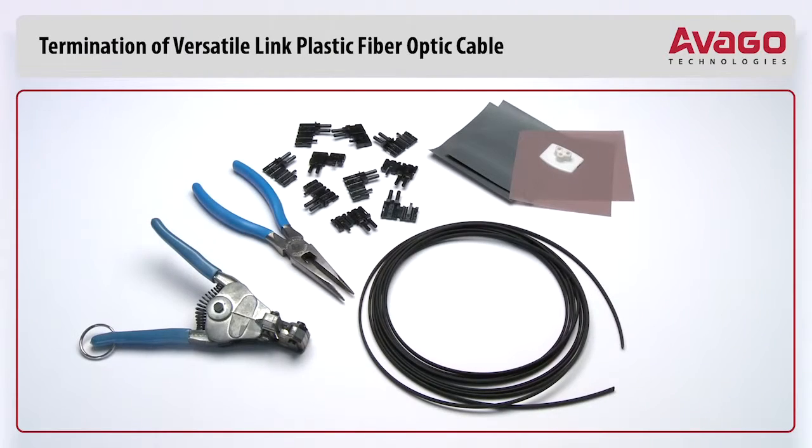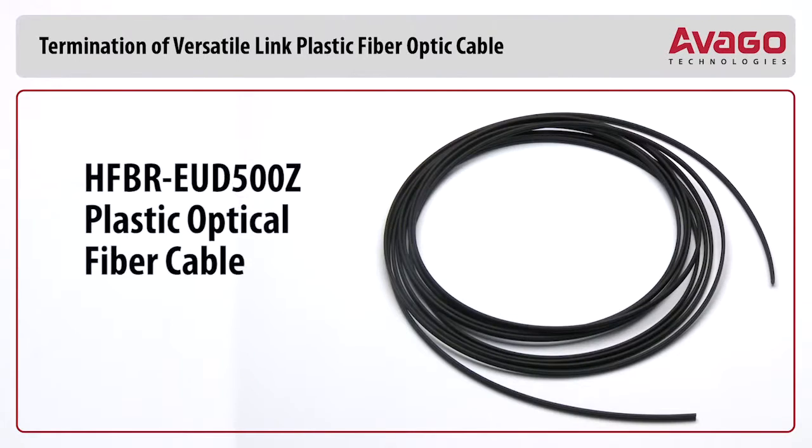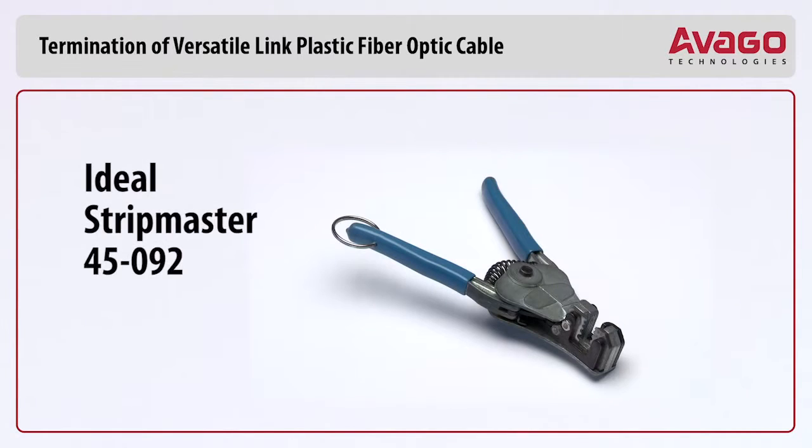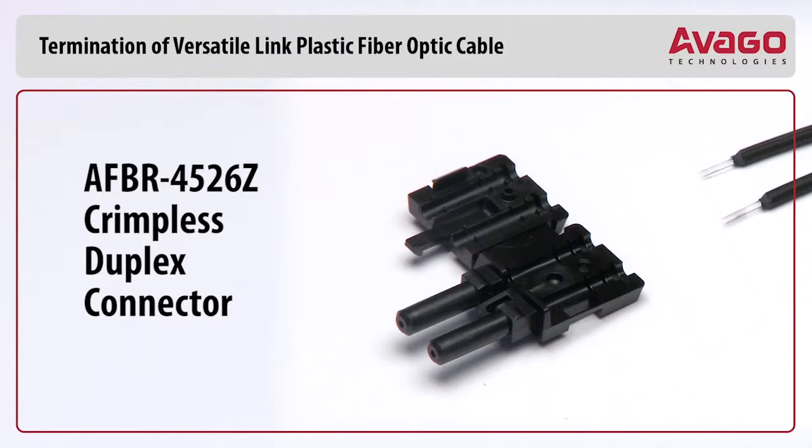The following materials are needed for plastic fiber termination: Plastic Optical Fiber Cable, for example HFBR-EUD500Z; wire cutters or scissors; 16 gauge wire strippers, for example Ideal Strip Master Type 45092; and Duplex Connectors AFBR4526Z.